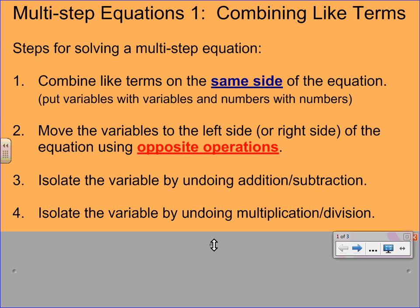And then next, you're going to continue to isolate the variable by undoing the multiplication and division. Remember, sometimes if there's a fraction, you use the reciprocal, so instead of using multiplication or division, you can use that technique as well. So let's get started with some examples.